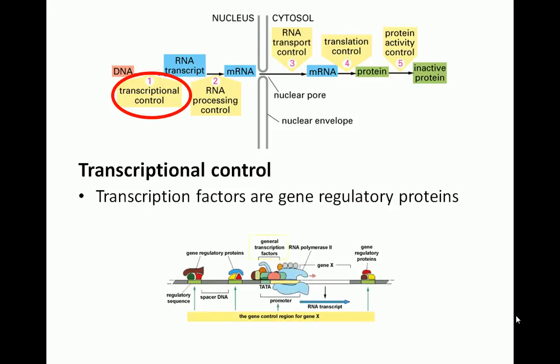The transcription factors that are necessary for RNA polymerase to bind to DNA are examples of gene regulatory proteins. Most of the time, many of these regulatory proteins must work together to achieve the desired function.